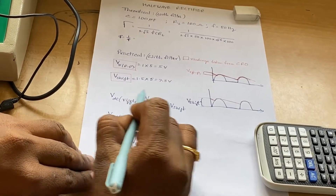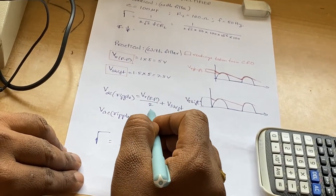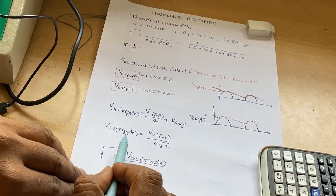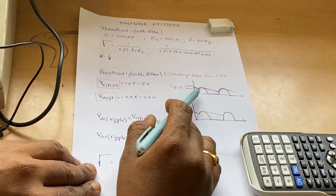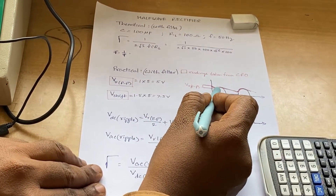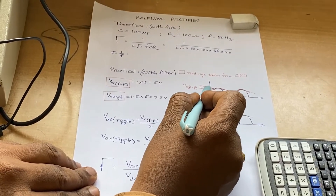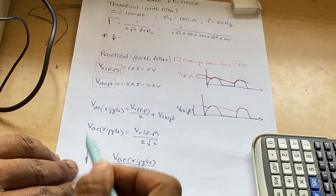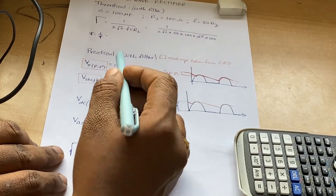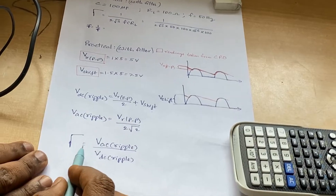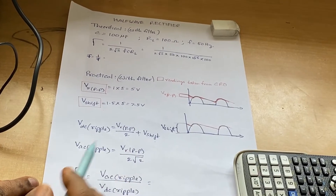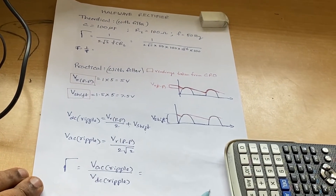The formula for VDC ripple equals Vr(peak-to-peak)/2 plus V-shift, giving 5/2 + 7.5. For VAC ripple, Vac equals Vr(peak-to-peak) divided by 2√2, which is 5/(2√2). Substituting these values gives you the VAC ripple value. The ripple factor equals VAC ripple divided by VDC ripple — substituting the VAC and VDC values gives the practical ripple factor with filter.